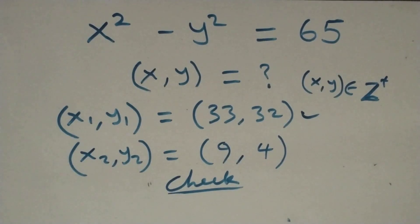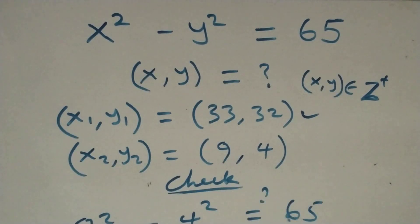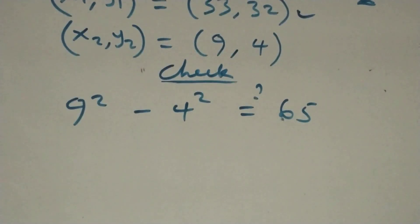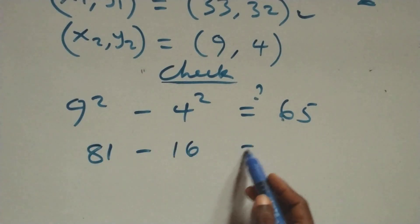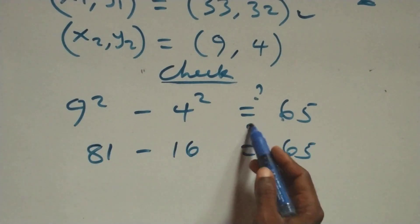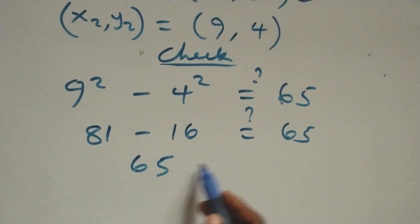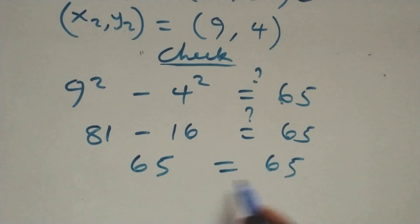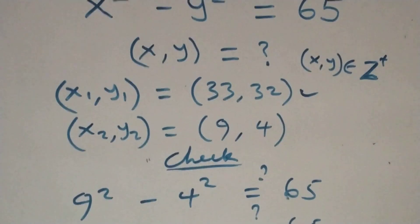For the second solution (9, 4), the equation becomes 9 squared minus 4 squared, which should equal 65. Nine squared is 81, and 4 squared is 16. So 81 minus 16 equals 65, which equals 65. Left-hand side equals the right-hand side, so the second solution (9, 4) also satisfies the equation.